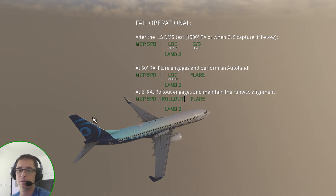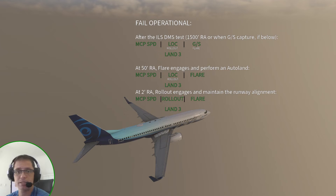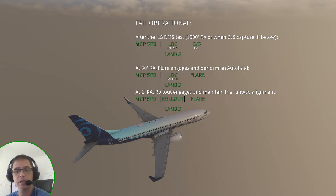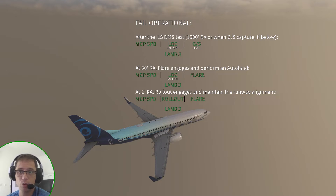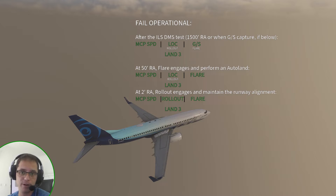Fail operational works exactly the same as fail passive initially, until you reach 1500 feet above the ground elevation. Once you reach 1500 feet, the ILS DME test is going to happen. For fail operational airplanes, instead of only flare being armed, you will also see rollout armed below the localizer indication. So on fail passive you have flare below glideslope; on fail operational you have flare below glideslope and also rollout below the localizer.